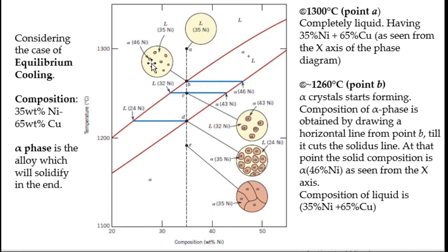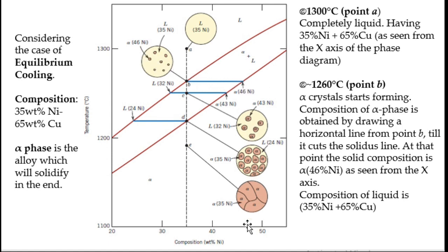Alpha crystals are shown schematically. The composition of the alpha phase can be found by drawing a horizontal tie line from point B. Wherever the tie line crosses the solidus it gives the solid concentration. At point B the tie line crosses the solidus at 46% nickel, so the forming alpha phase has 46 weight percent nickel and rest copper.